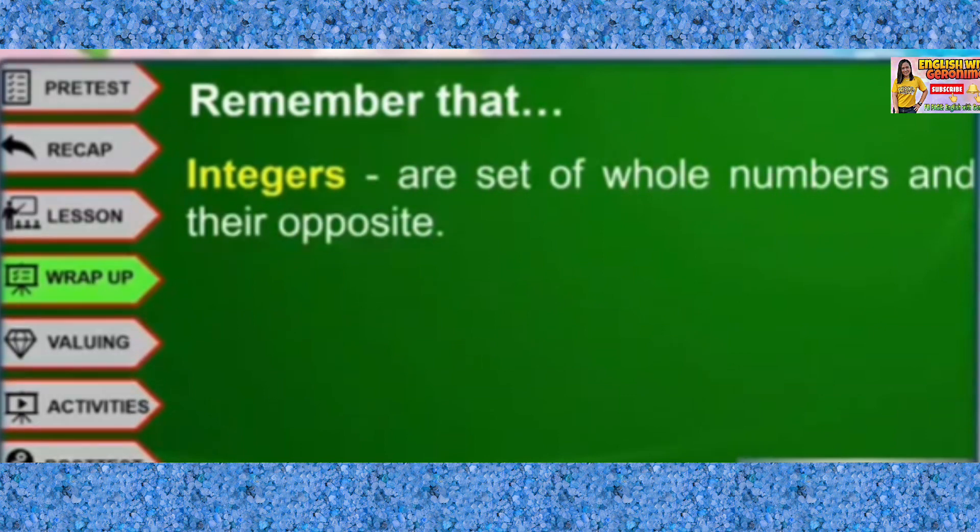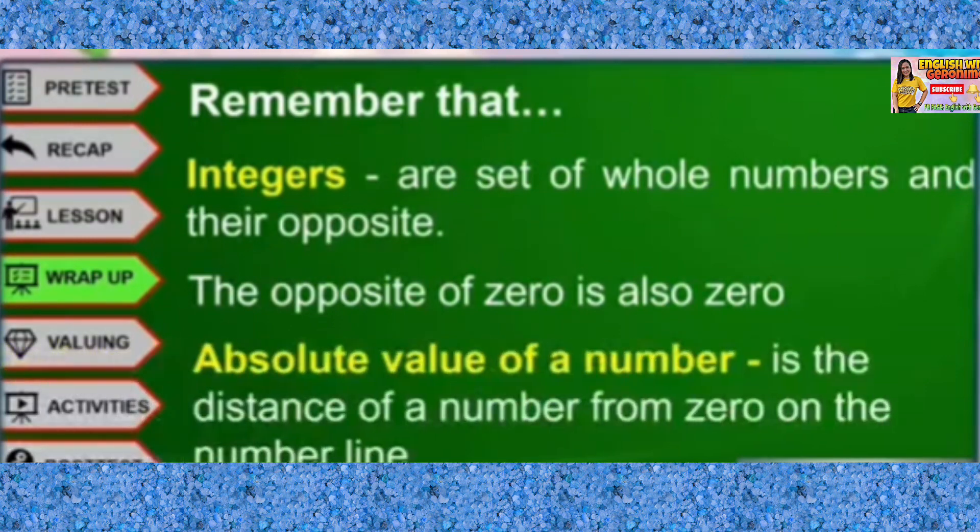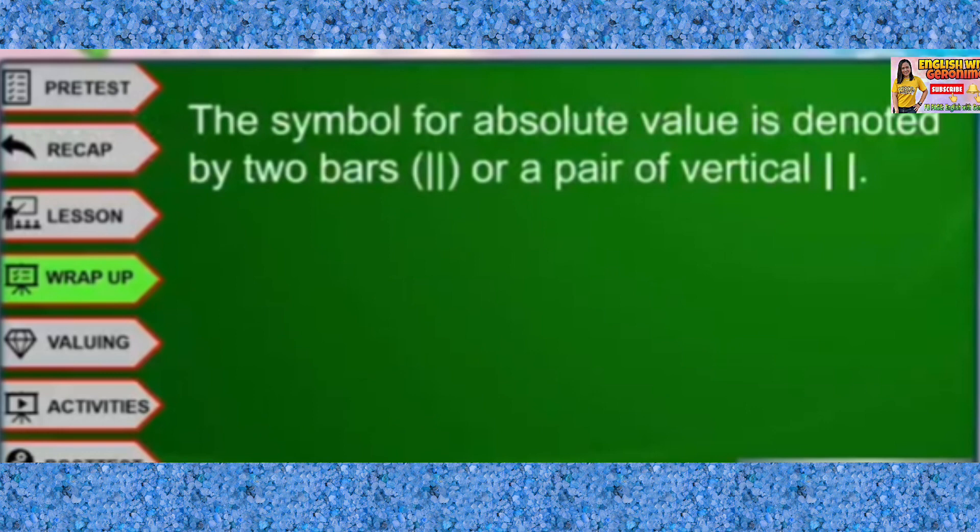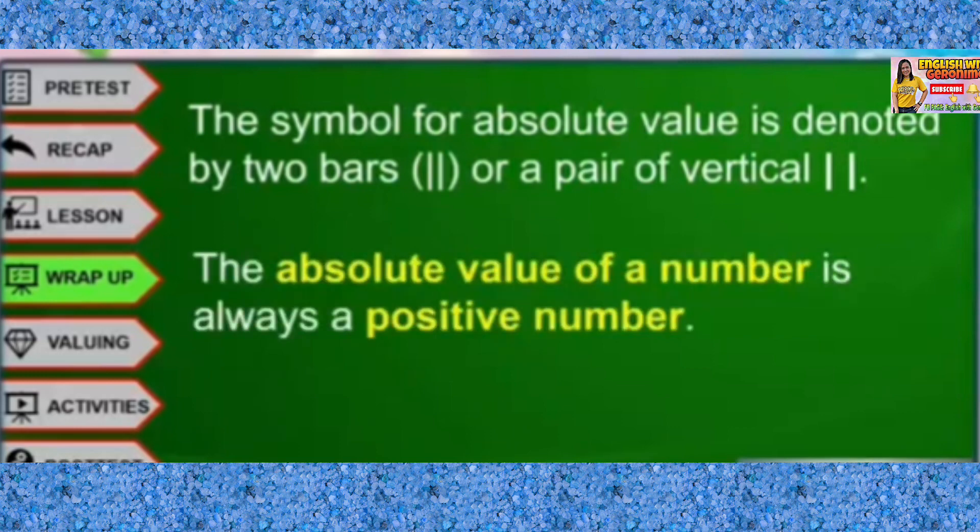Integers are a set of whole numbers and their opposite. The opposite of 0 is also 0. The absolute value of a number is the distance of a number from 0 on the number line. The symbol for absolute value is denoted by two bars or a pair of vertical lines. The absolute value of a number is always a positive number. The absolute value of n is equal to n and the absolute value of negative n is also equal to n, where n is any number.